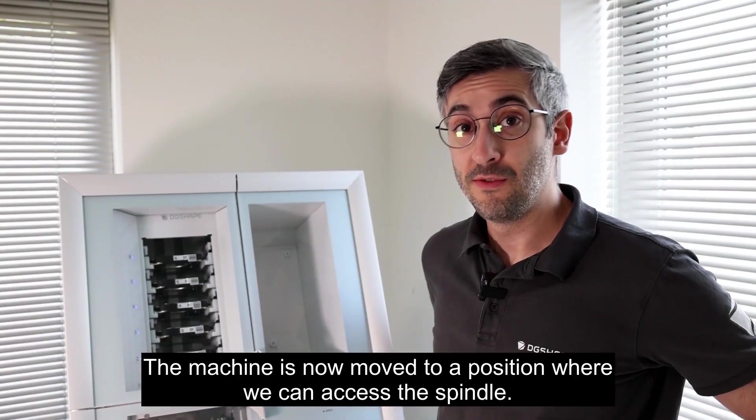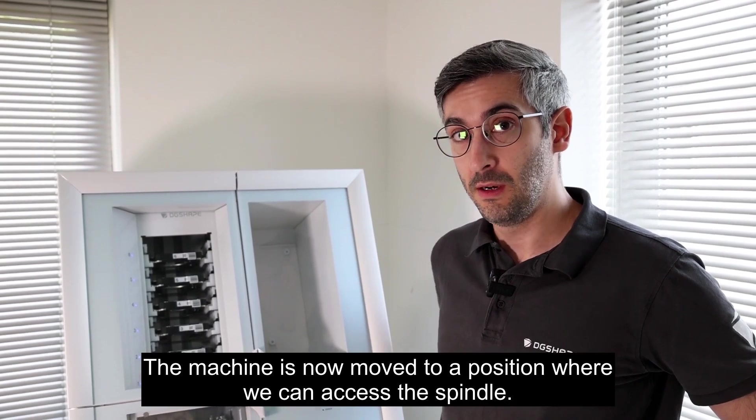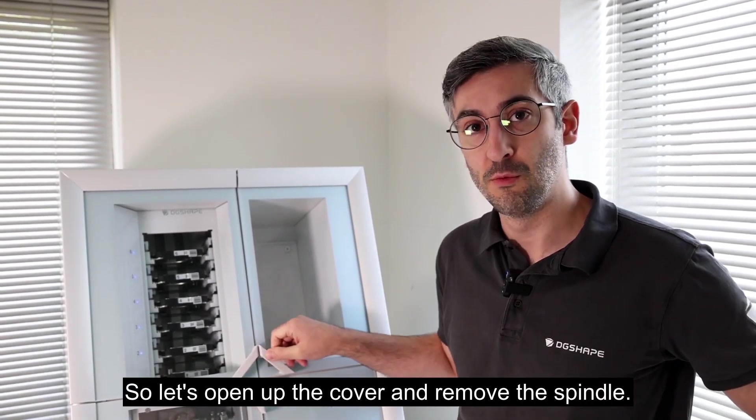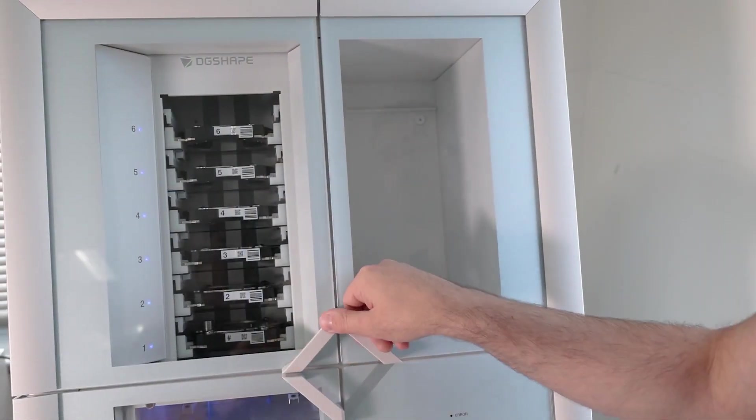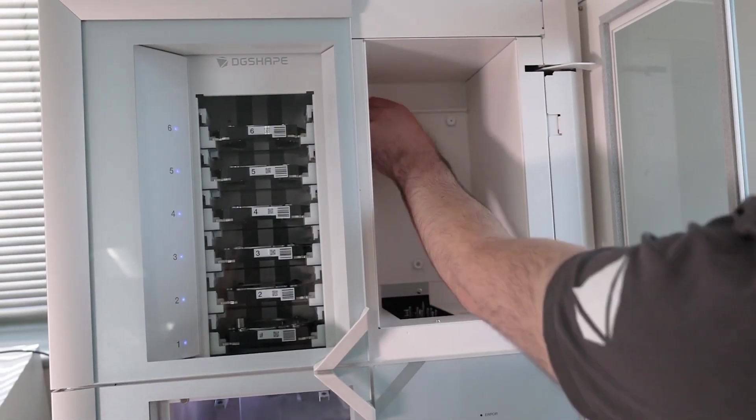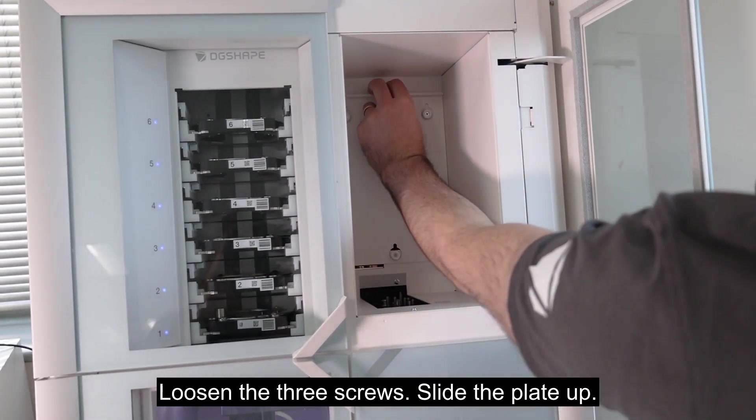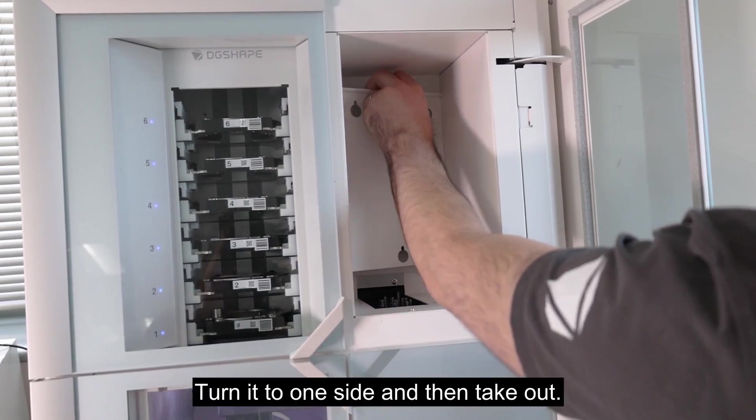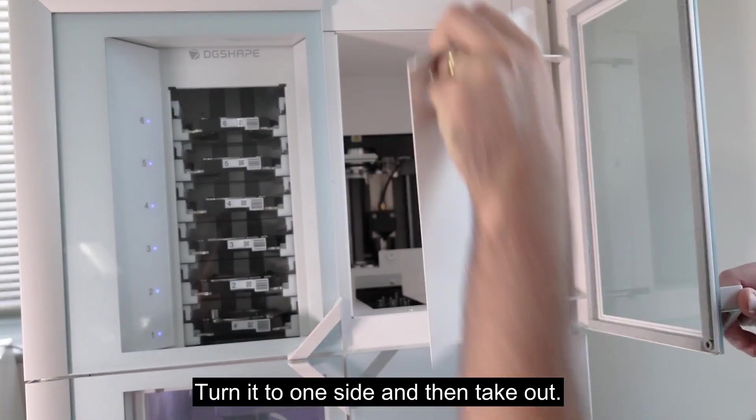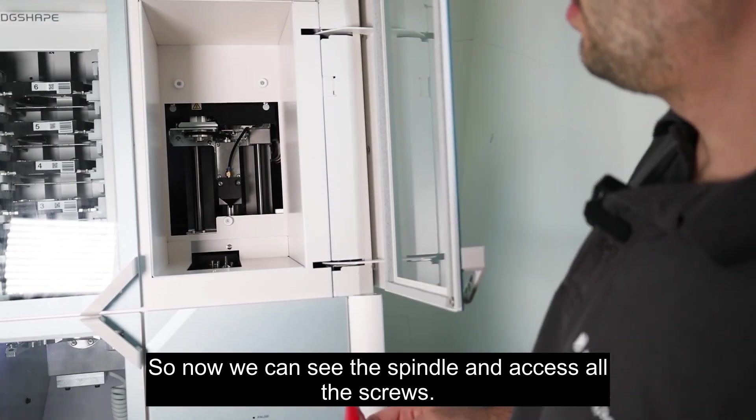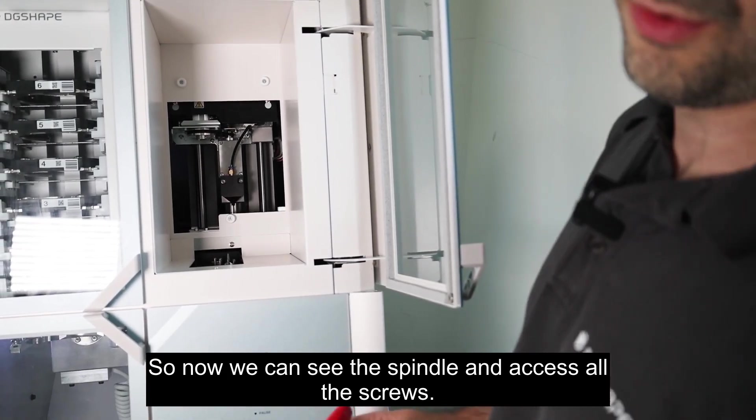The machine is now moved to a position where we can access the spindle, so let's open up the cover and remove the spindle. Loosen the three screws, slide the plate up, turn it to one side and then take out. So now we can see the spindle and access all the screws.